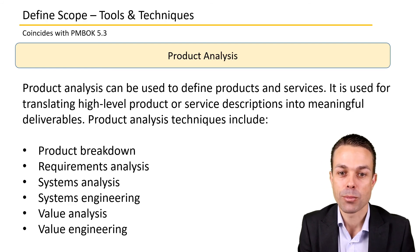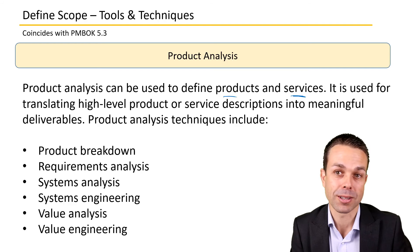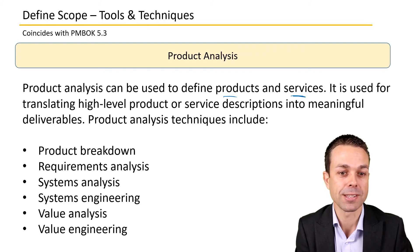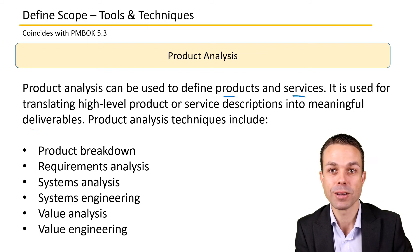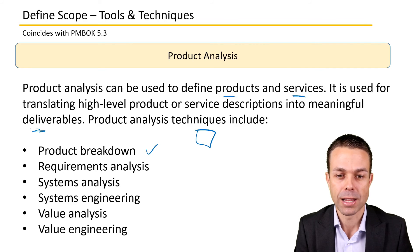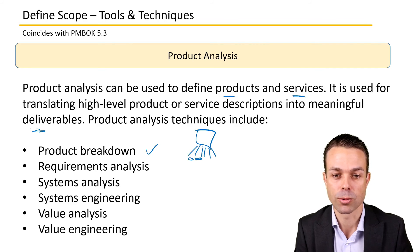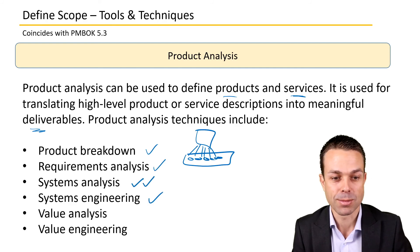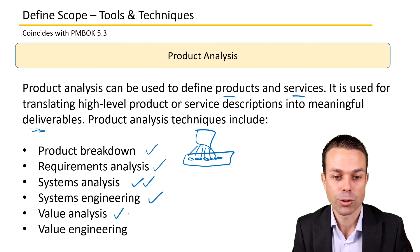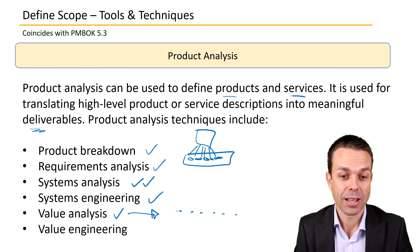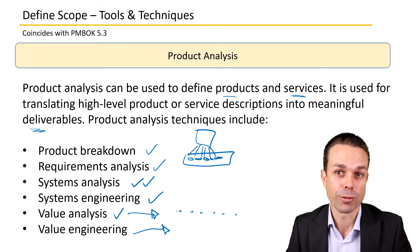Product analysis is a tool and technique used to define the products and services we'll be delivering to meet customer requirements. It translates high-level product or service descriptions into meaningful deliverables. Product analysis techniques can include product breakdown — breaking a high-level product idea into smaller pieces — requirements analysis, systems analysis, systems engineering, value analysis (determining the priority of each part), and value engineering (how to engineer more value out of fewer components).